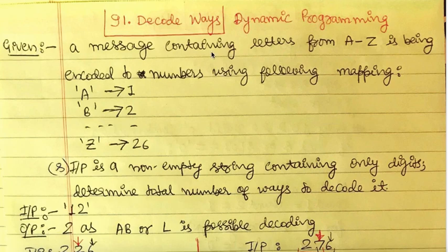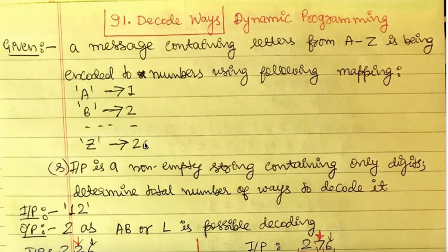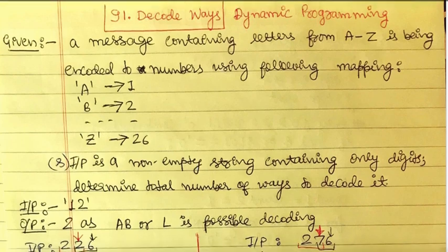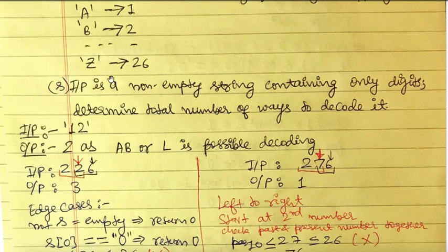The question is: given a message containing letters from A to Z, which is being encoded to numbers using the following mapping — A maps to 1, B maps to 2, and Z maps to 26. So 2 can represent B, and 26 can represent Z, creating some ambiguity in decoding. Encoding means converting characters to numbers; decoding means doing the reverse — given numbers, find the corresponding letters.